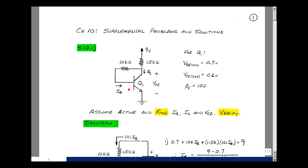if you assume that this is in the active region, can you find the base current, the collector current, and the collector emitter voltage? And then verify that this guess is correct.